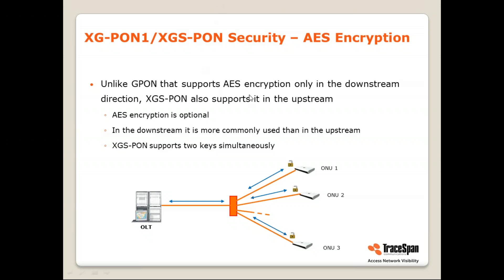GPON only supports AES in the downstream direction, since the main security risk it addresses is a customer sniffing downstream packets. In XGS-PON, AES encryption can also be done in the upstream. It is optional, as in GPON, but it is more commonly used and can be supported in both directions. Another addition in XGS-PON is that it supports two encryption keys simultaneously, so for every packet the sending side can decide whether to use key number one or key number two — both for the OLT encrypting downstream packets and for the ONU encrypting upstream packets.